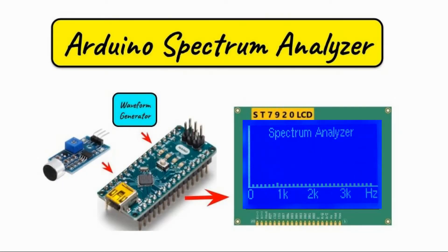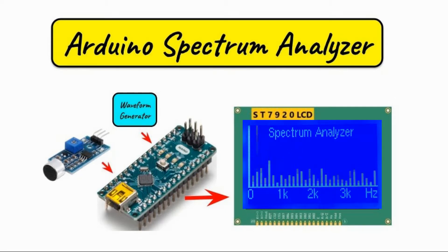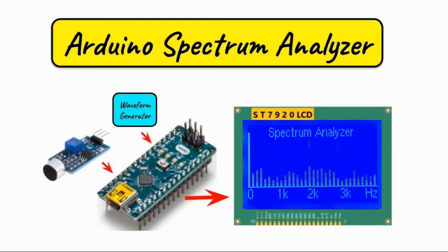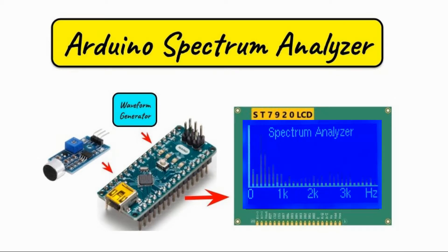The ST7920 can display alphabets, numbers, and user-defined characters. It can be interfaced to a microcontroller either in parallel using 4 bits or 8 bits, or interfaced in serial using an SPI connection.